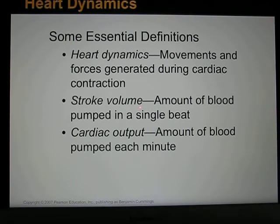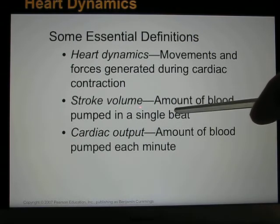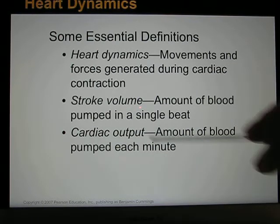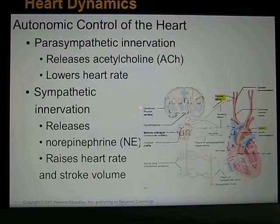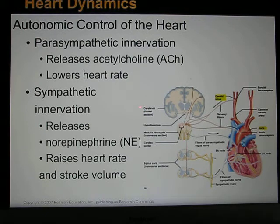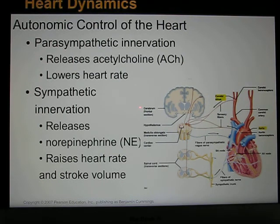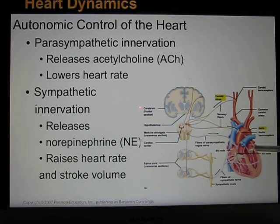Stroke volume is the amount of blood sent out per contraction, and it increases with exercise. Cardiac output is how much blood is sent out per minute: stroke volume multiplied by heart rate. Both increase during exercise. The autonomic nervous system regulates heart rate: the parasympathetic nervous system decreases heart rate via the SA node, while the sympathetic nervous system releases norepinephrine to increase both heart rate and stroke volume — sending more blood to the body during emergency situations.